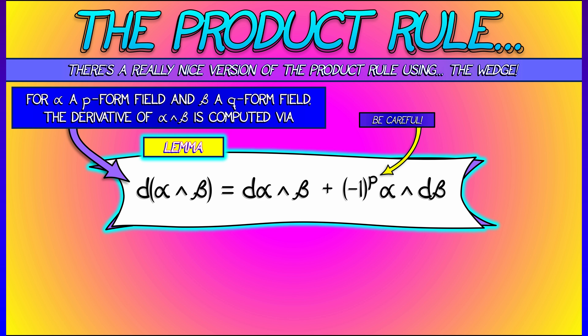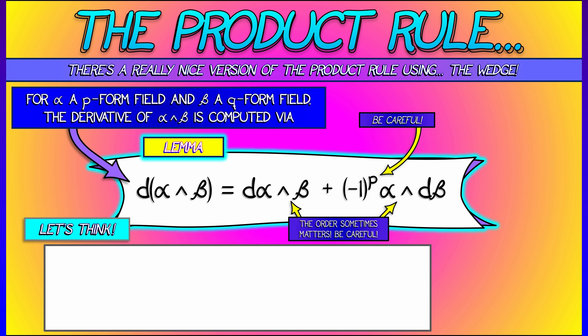And that negative 1 to the p is the thing that you've got to be careful about. Remember, p is associated to alpha. So there's a little bit of a technicality here, right? The order in which you do this wedge product might matter. That negative 1 to the p might really matter if p is odd. So be careful. And think.